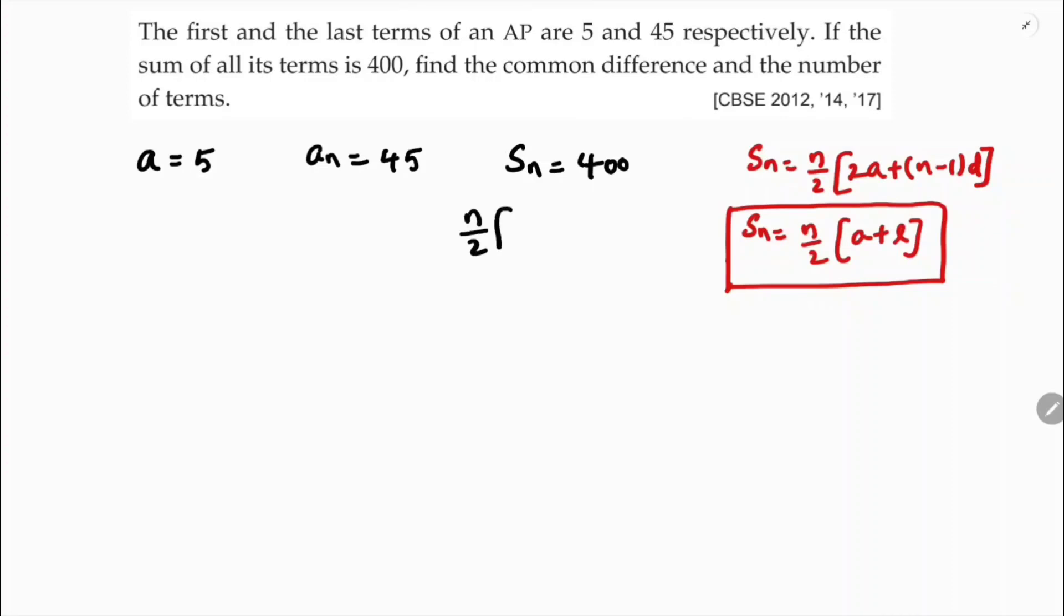So n by 2 into a plus l equals 400. n by 2, a is 5 plus l is 45, equals 400.